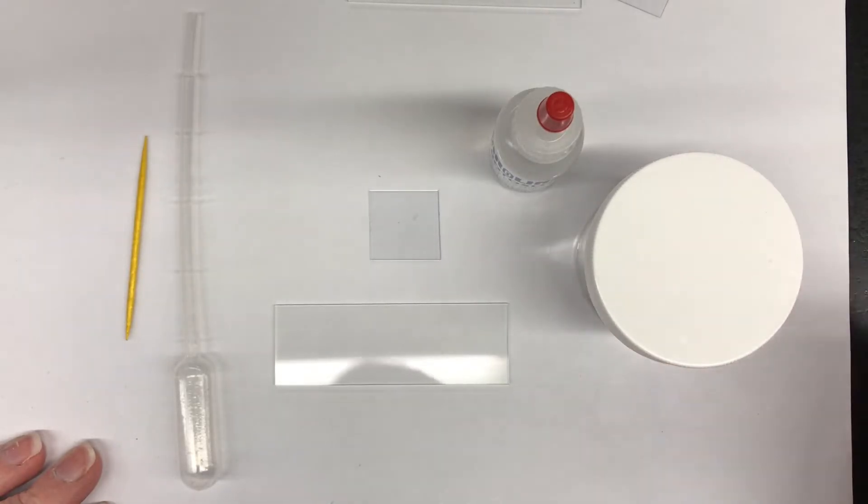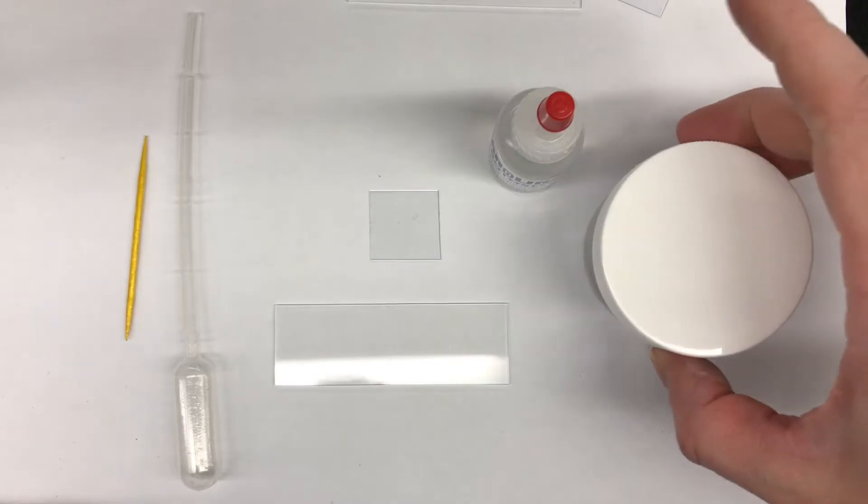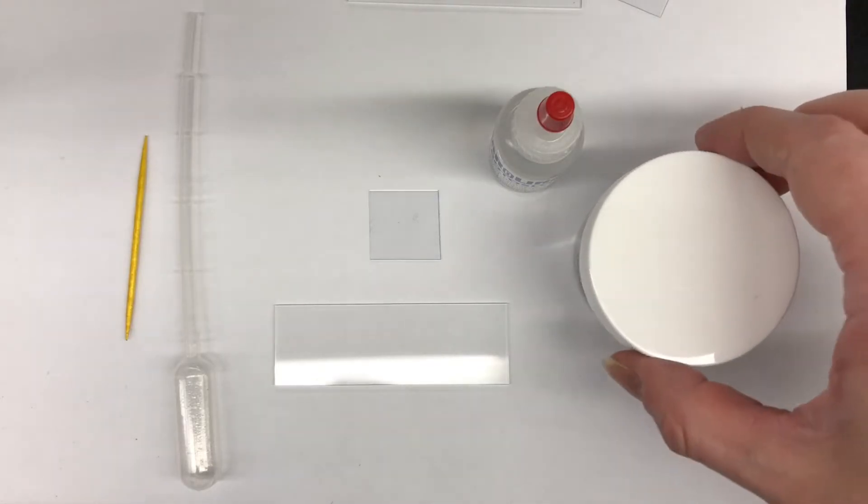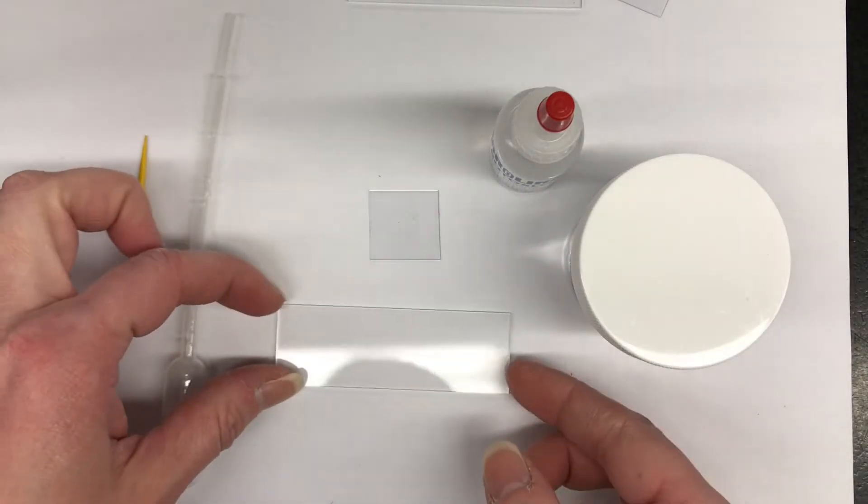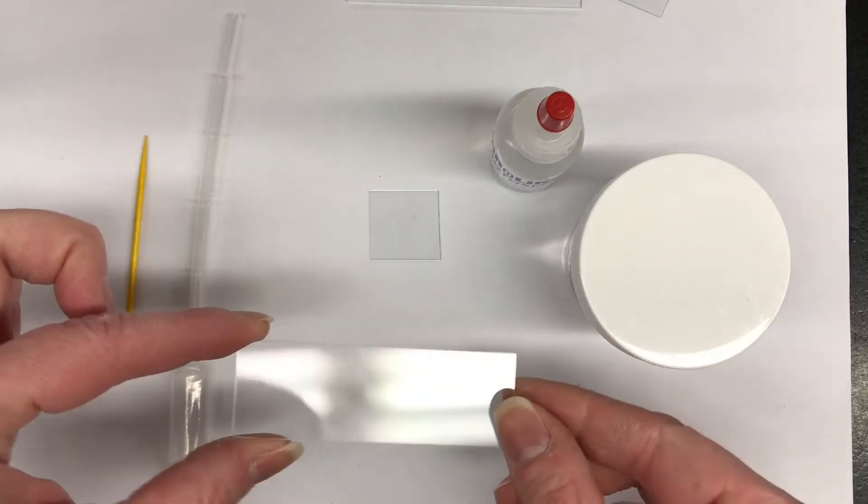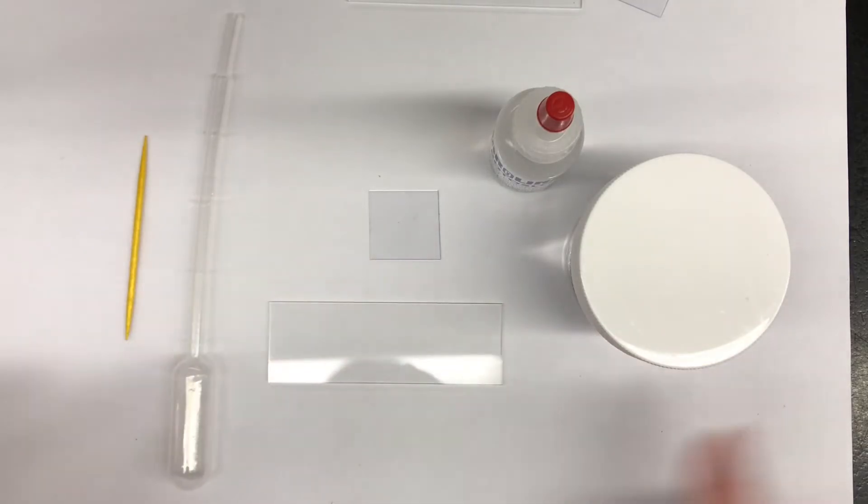The first wet mount slide I'm going to make is with the amoeba. So first, you make sure that your slide and your cover slip are clean. These are both nice and clean.